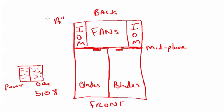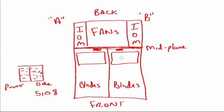We talked about fabric A and fabric B. There's no rule that says A has to be on the left and B has to be on the right. The mezzanine card fits on the back of the blade, and there are various models. The M71KR, M72KR Menlo cards, as well as the M81KR parallel card — the VIC virtual interface card — both have two 10-gig Ethernet adapters. They also have two Fibre Channel HBAs, giving the blades 20 gigs of throughput for Ethernet traffic. The HBA adapter is two, four, or eight gig auto-sensing, so up to 16 gigs of throughput for Fibre Channel.